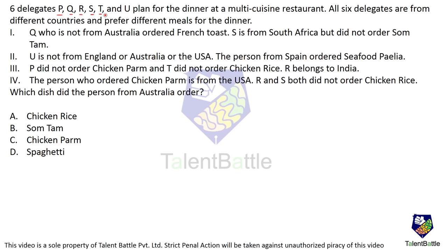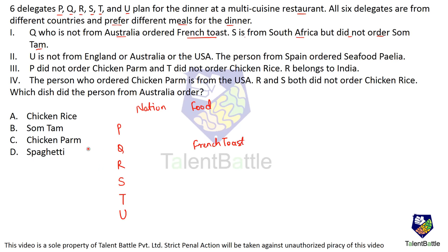Six delegates — P, Q, R, S, T, and U — plan for dinner at a multi-cuisine restaurant. All six are from different countries and prefer different meals. Q, who is not from Australia, ordered French toast. S is from South Africa but did not order som tam. U is not from England, Australia, or USA. I will prepare a table with delegates, nations, and food.